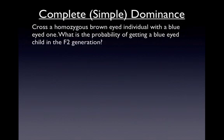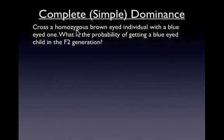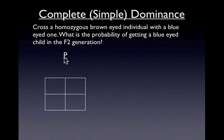Let's say we have this problem here. It says cross a homozygous brown-eyed individual with a blue-eyed one. What is the probability of getting a blue-eyed child in the F2 generation? The first thing we need to do is set up the parental generation.